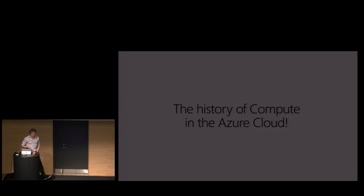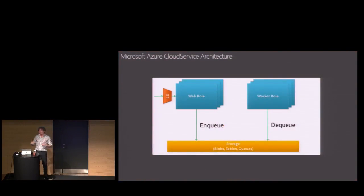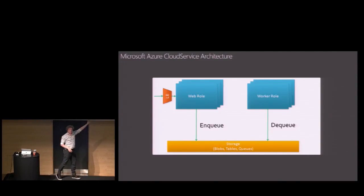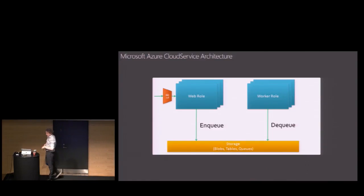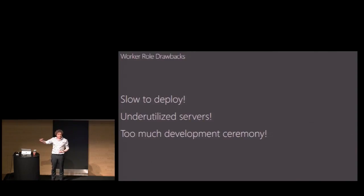Let's talk about compute in the cloud. In the cloud you originally had Cloud Services — originally called the hosted service. How many have deployed a cloud service? This is the original architecture for the cloud. You'd have your front-end API or web application putting messages on a queue, and the back end — the worker role — is where background compute happened. The problems with worker roles are that they're slow to deploy and you're degrading a server by giving it a menial task — under-utilizing resources even though you're in the cloud.